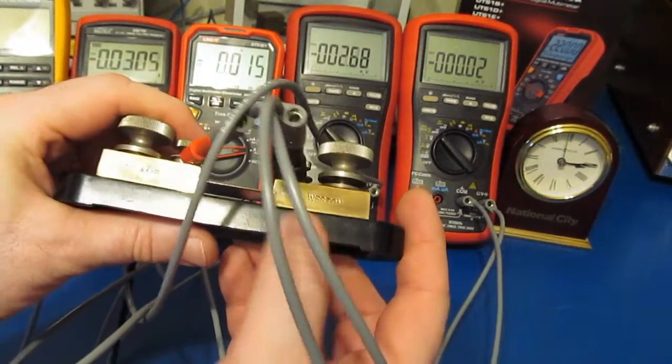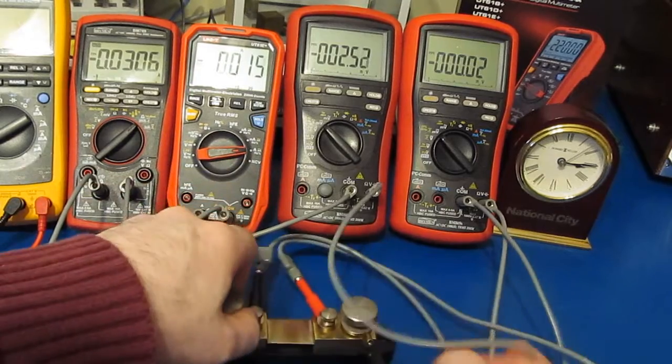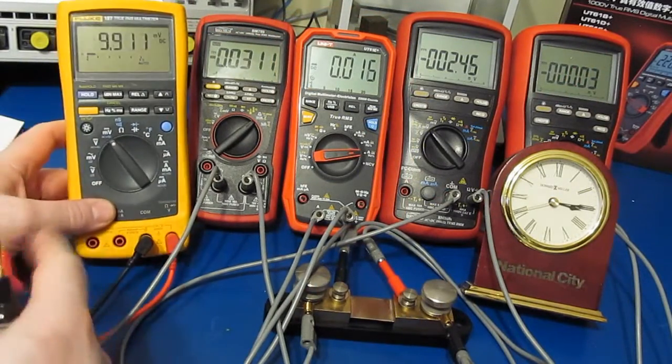This is the shunt we're going to be using - an old Weston 50 amp shunt. So 50 amps will give 50 millivolts out of it. I also have my Fluke 187 out to look at the burden voltage of these two meters.